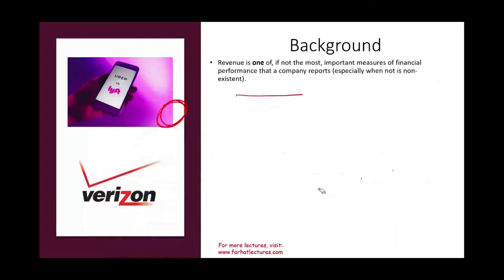Revenue is one of the most important measures of financial performance, especially when a company doesn't make a profit. A company like Uber or Lyft — they don't have profit; all they do is generate revenue. So to evaluate the company, you can only look at the revenue. Therefore, revenue is very, very important. It's also important for companies that do make profit, but if a company doesn't make a profit, your only way to evaluate it is to look at the revenue.